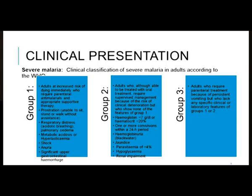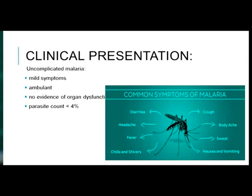That is severe malaria. The classification will influence your management, and the WHO advises that everybody with severe malaria should be treated ideally in an ICU setting with parenteral treatment. Uncomplicated malaria has milder symptoms: the most common are headache, body ache, fever, chills, sweats, nausea and vomiting, diarrhea, and cough.